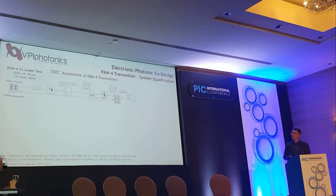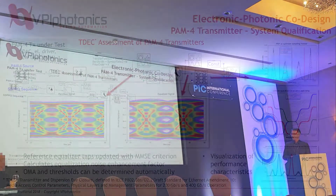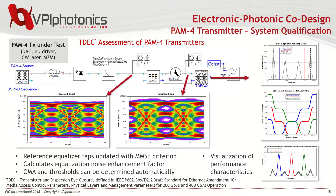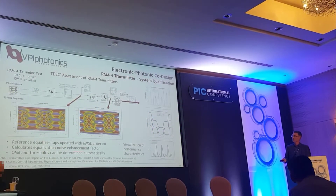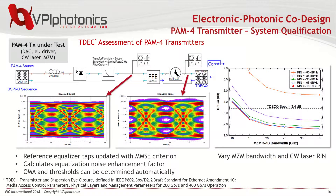One more step is to investigate how a PAM4 transmitter behaves in system characterization. For intra-data-center applications, system qualification is based on certain standards where we measure the TDECQ — Transmitter and Dispersion Eye Closure Quaternary — for PAM4 applications. This means you don't just want to see the spectrum or eye diagram, but how the PAM4 source — including the driver, CW laser, and optical modulator — behaves after a piece of fiber, a receiver, and a standard optimized five-tap equalizer. This optimization can be done automatically in system design tools, and you can also evaluate whether certain RIN levels on your laser meet the TDECQ spec of 3.4 dB, or whether to feed results back to device simulations.